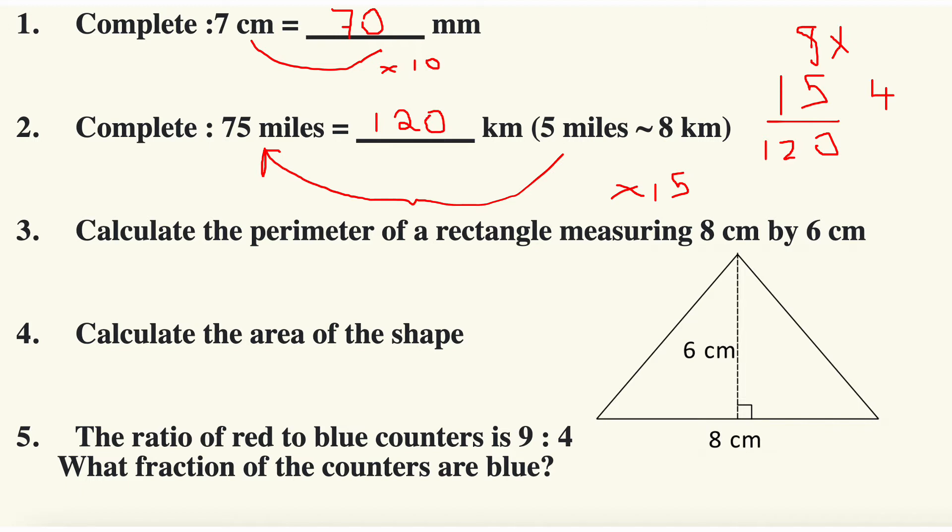This is question number three: calculate the perimeter of the rectangle measuring eight centimeters width and the height is equal to six. Well, I've got to work up the slanted height, so I've got to use Pythagoras to work up this slanted height. This half of it will be equal to four.